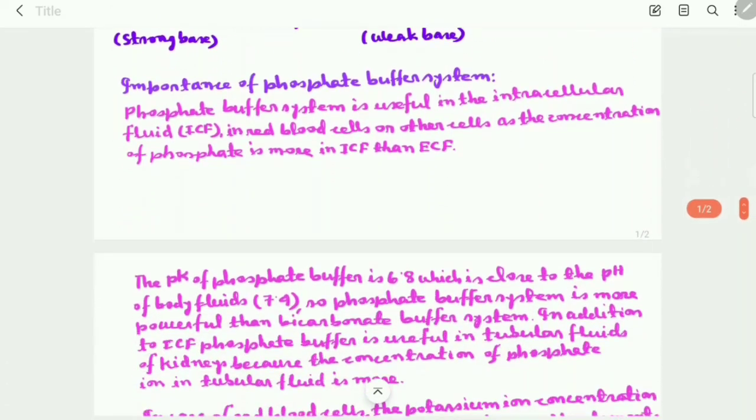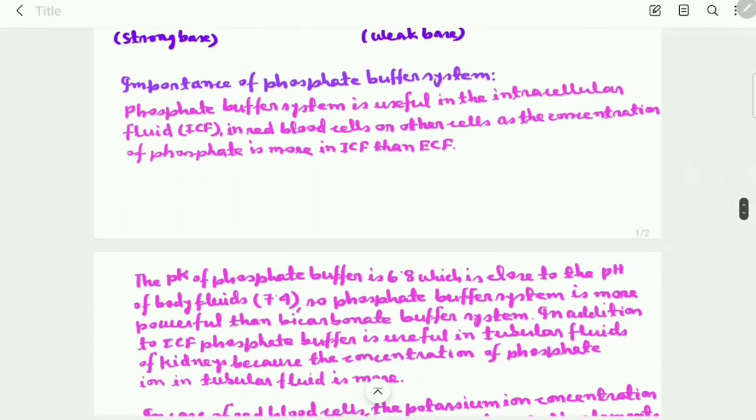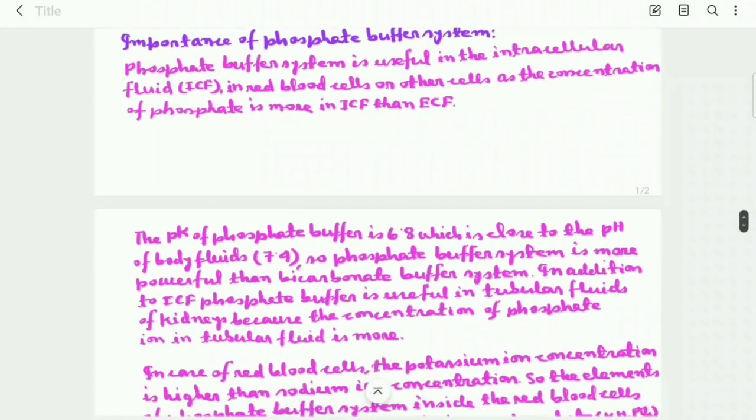The importance of phosphate buffer system: phosphate buffer system is useful in the intracellular fluid in red blood cells or other cells, as the concentration of phosphate is more in intracellular fluid than in extracellular fluid.